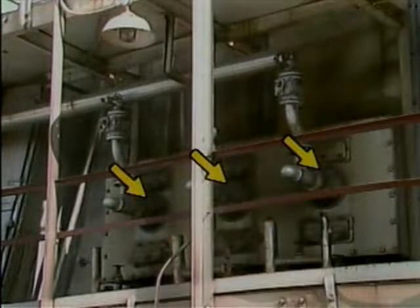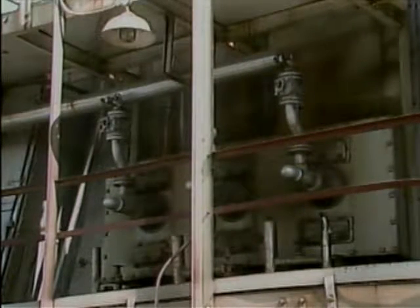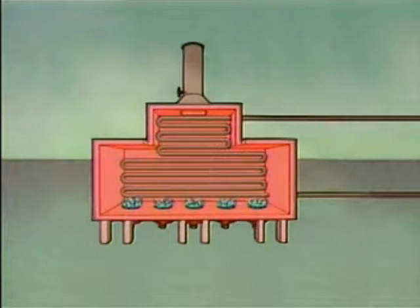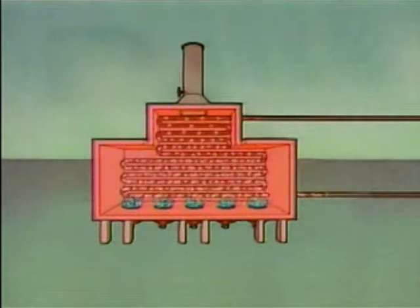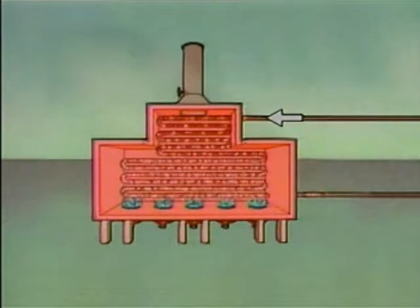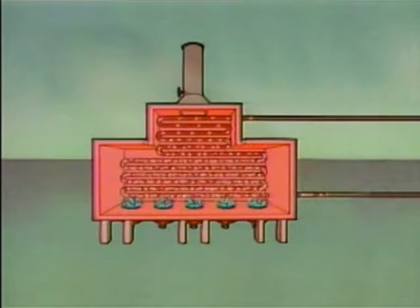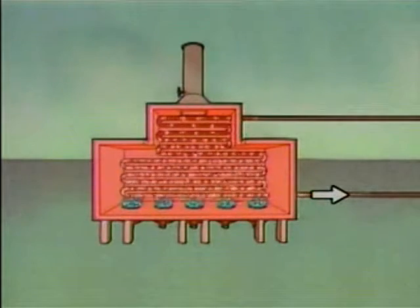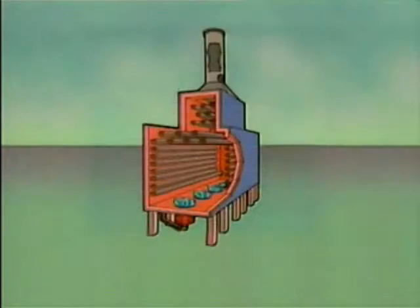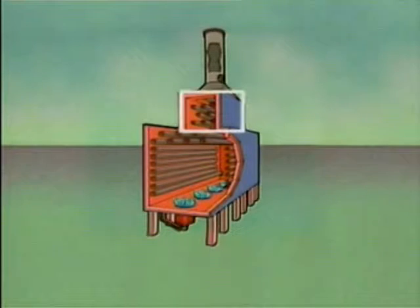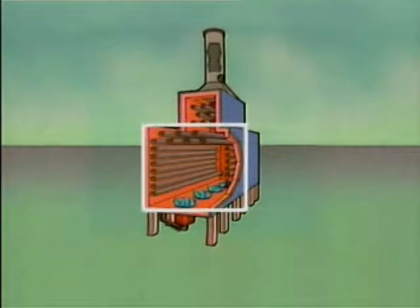Some furnaces are wall-fired, while others may use both wall and floor burners. In addition to burners, furnaces contain many other important parts. Inside this furnace, tubes carry the process fluid through the furnace. The process fluid enters the furnace in the tubes near the stack, passes through the tubes, and leaves near the bottom of the furnace by the burners. The tubes are grouped into two major areas: the convection section, which is closer to the stack, and the radiant section, which is closer to the burners.